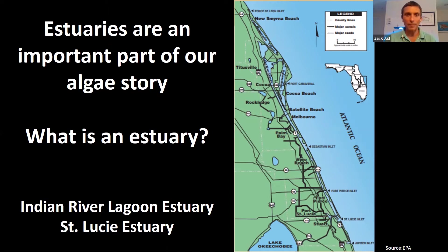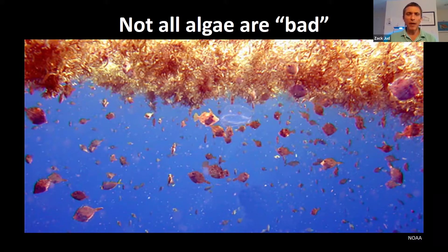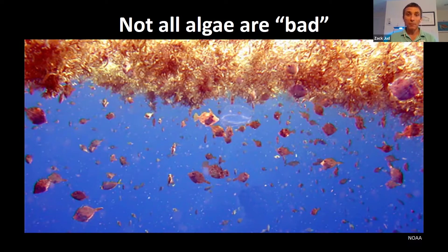We're talking about algae today, and I want to start by telling you that not all algae are bad. There's a misconception that algae are always harmful, and I think the news media has painted that picture for us. In fact, there are thousands of different species of algae on Earth, and many are actually beneficial. In this image we have sargassum — species that live out in the open ocean, float in big mats, and provide really important habitat for lots of animals. Fish take shelter under floating mats of sargassum, and baby sea turtles use it as their first habitat.